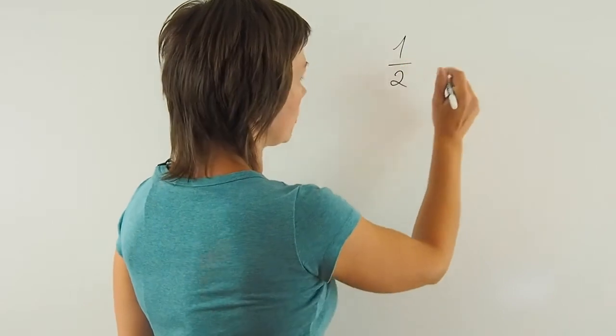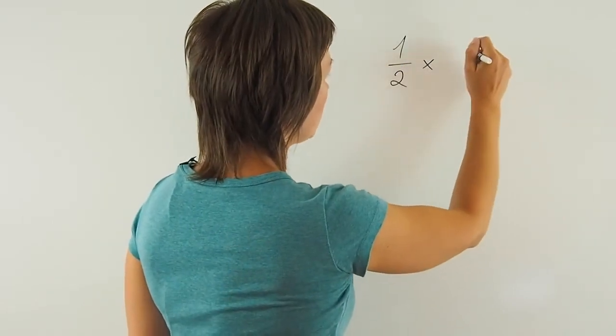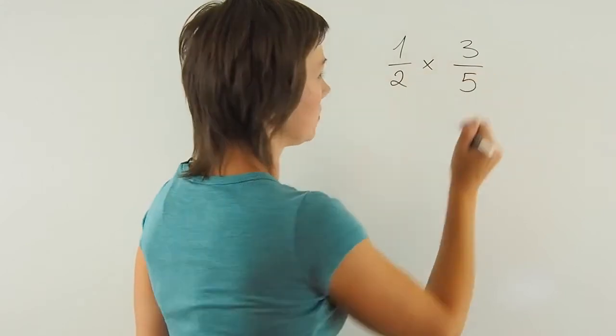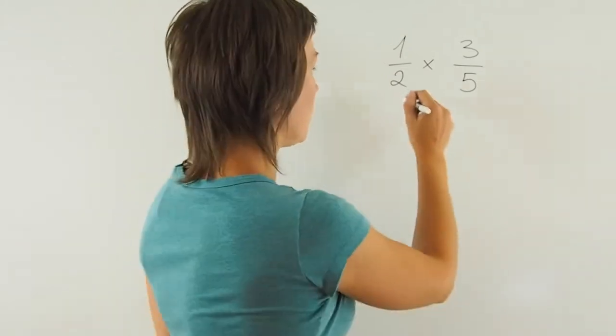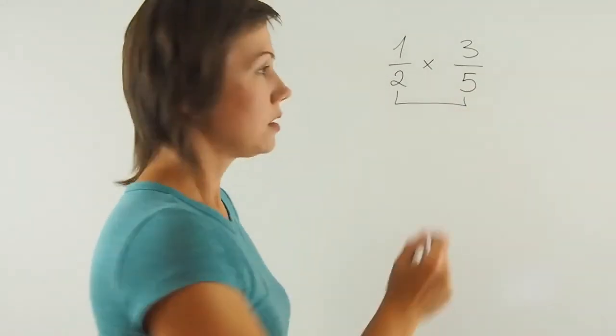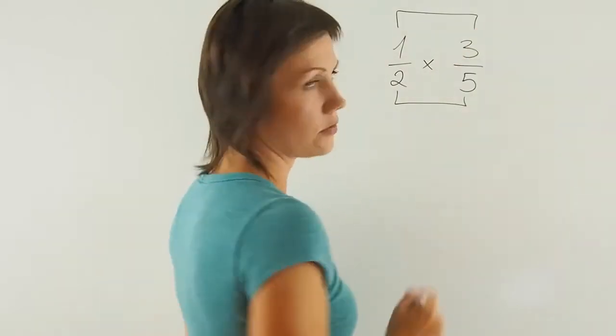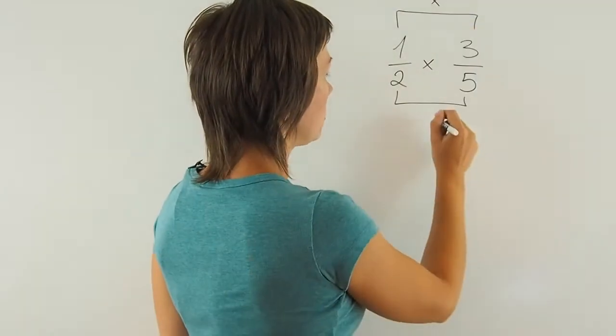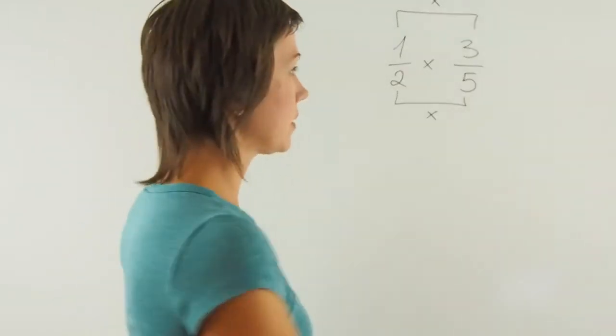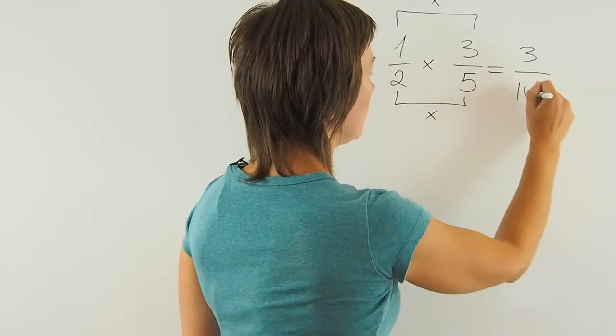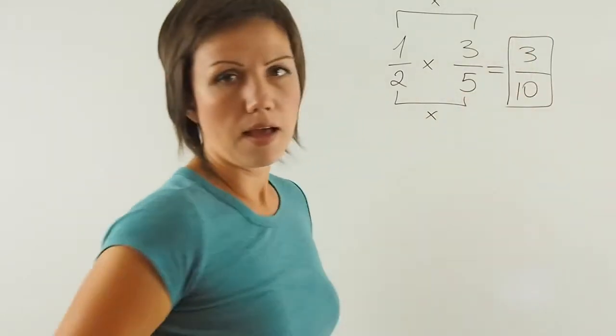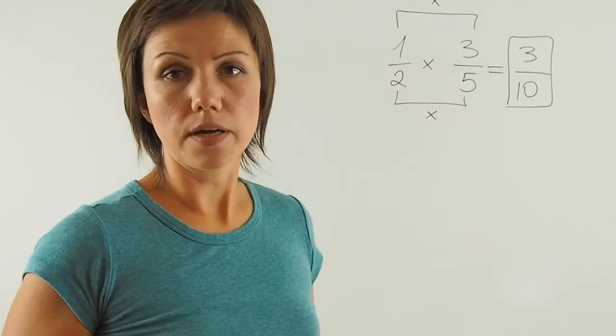Let's see how we can multiply two fractions. Say you have a fraction 1 half and you want to multiply it by 3 fifths. All you need to do is to find the product of the denominators and the product of the numerators. So times these two numbers and these two numbers separately. Then 3 times 1 is 3 and 2 times 5 is 10. And that's all you need to do in order to multiply two fractions.